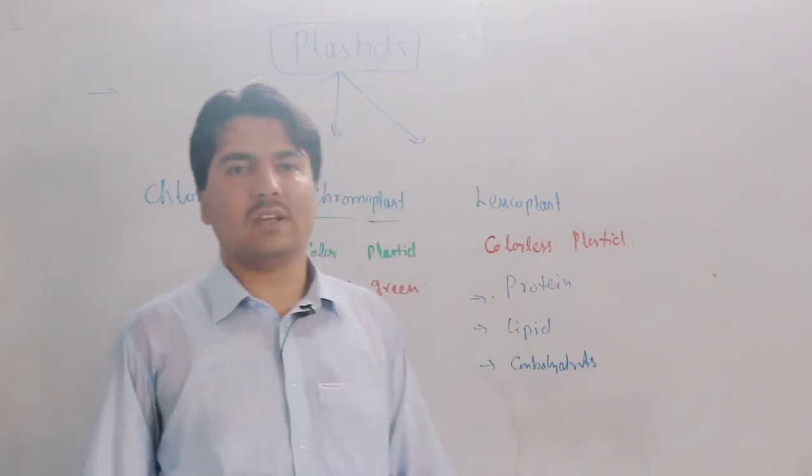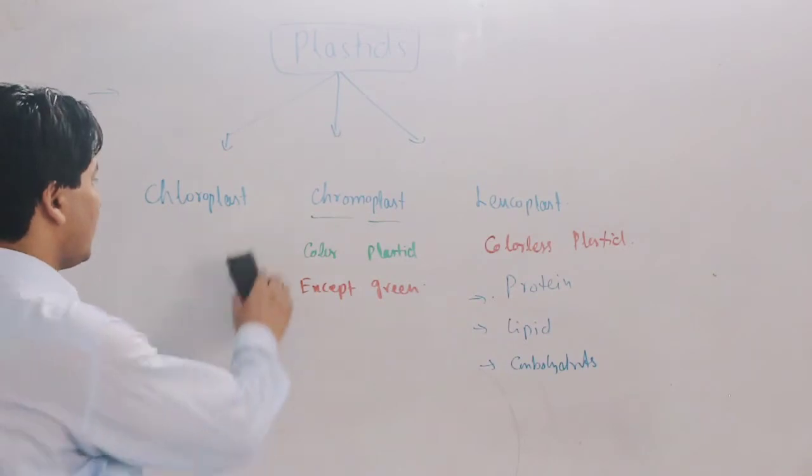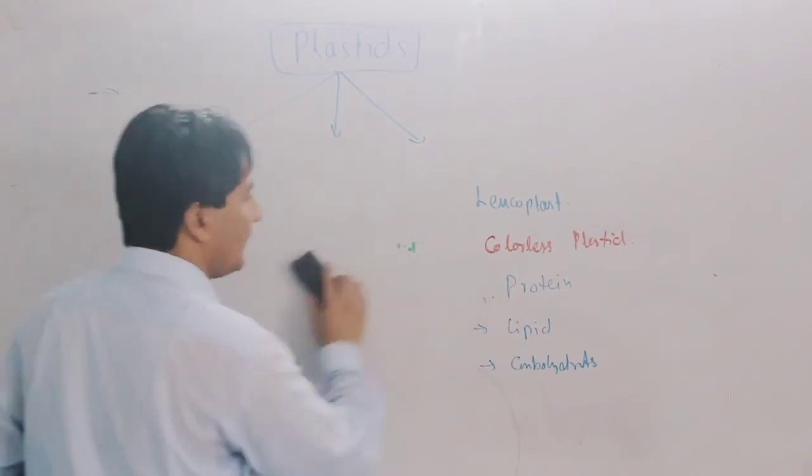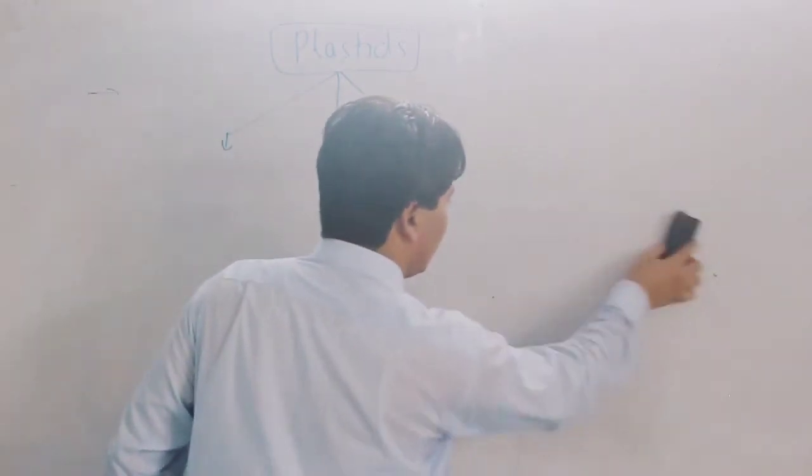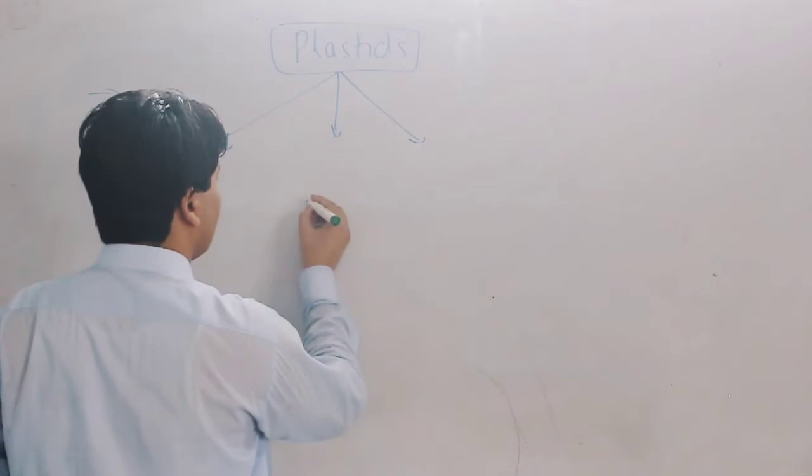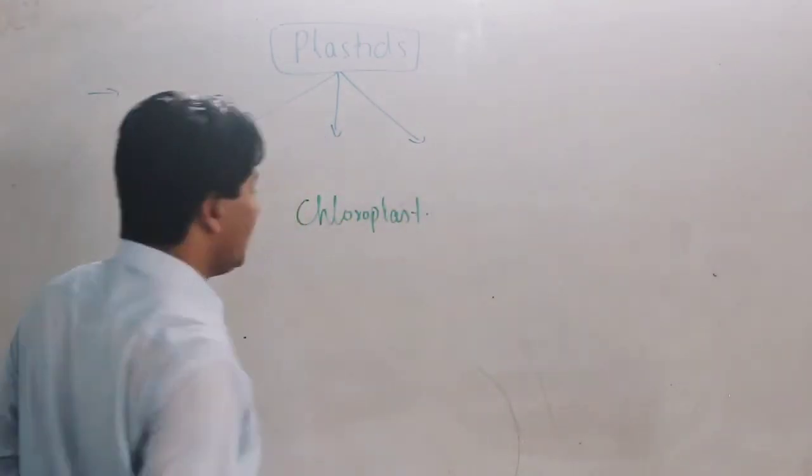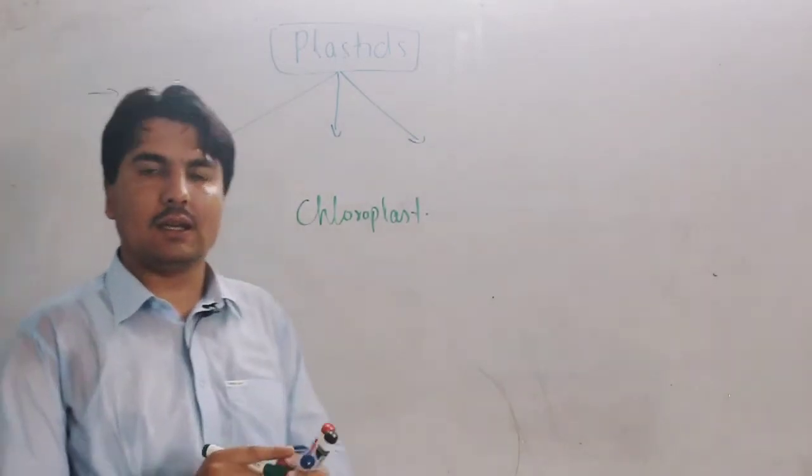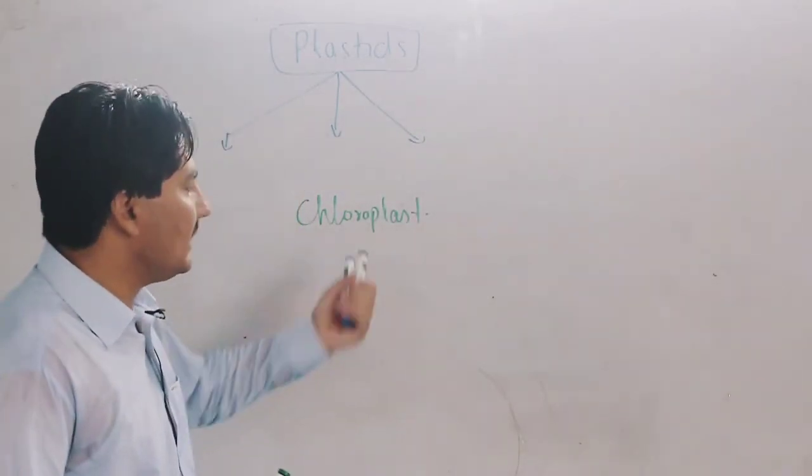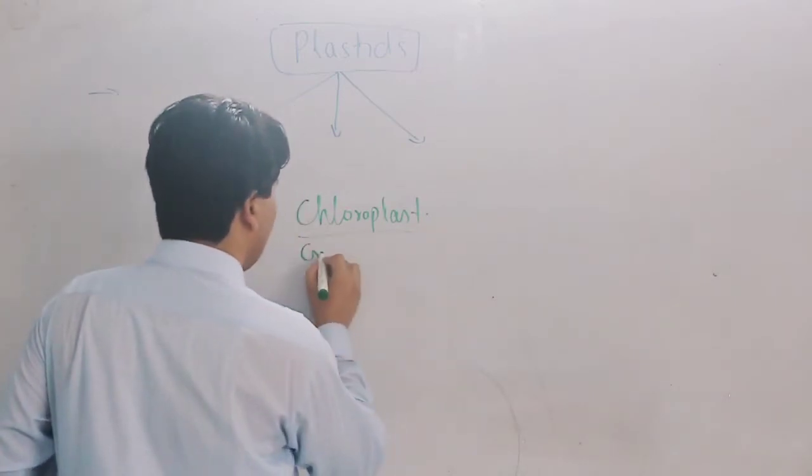Now the most important one is chloroplast. Chloroplast is formed only in plant cells. Chloroplast, as the name indicates, means green plastic - chloro means green and plastic means plastic, so this is green plastic.